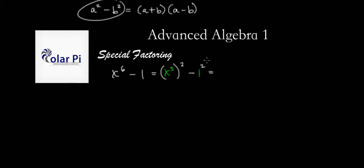So a is x cubed and then b is 1. So we'd write a plus b times a minus b. Here it is: x cubed plus 1 and x cubed minus 1. It doesn't matter which proceeds.